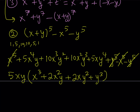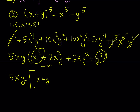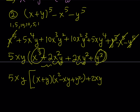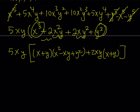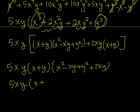That expression is further factorable. We split x cubed plus y cubed as x plus y times x squared minus xy plus y squared, and the middle two terms factor as 2xy times x plus y. Pulling out the common factor x plus y gives x plus y times x squared minus xy plus y squared plus 2xy, and negative xy plus 2xy simplifies to positive xy. So the second expression is 5xy times x plus y times x squared plus xy plus y squared.